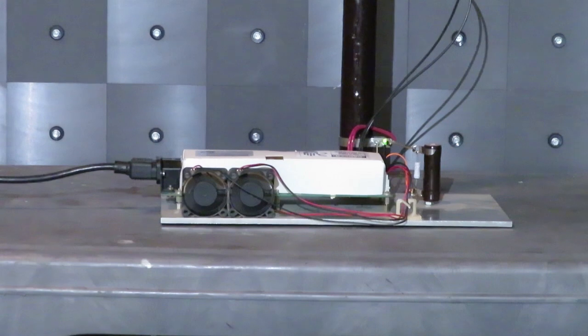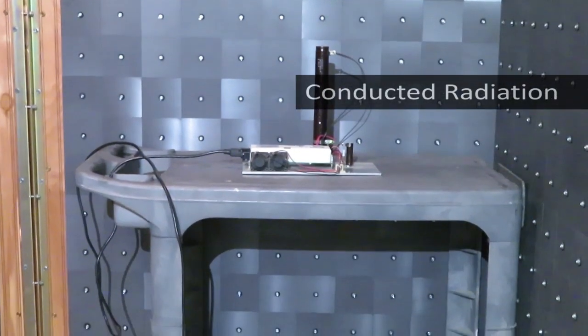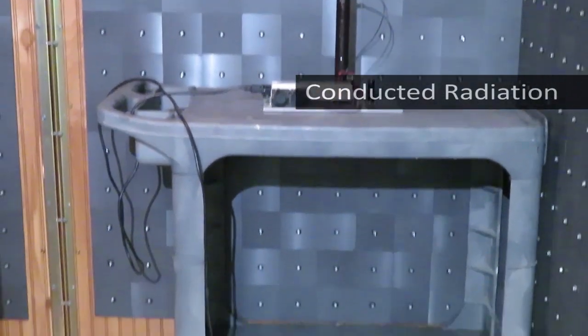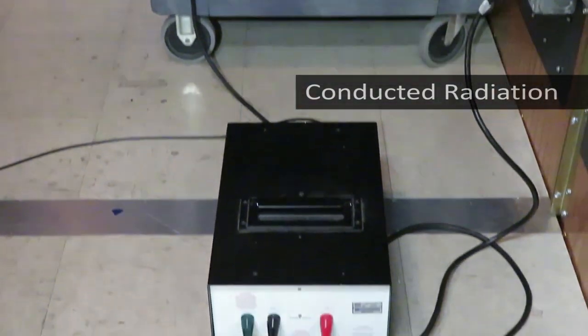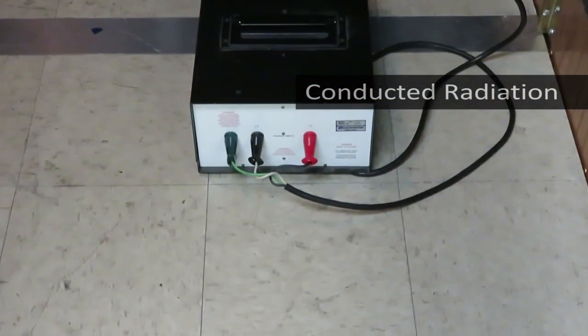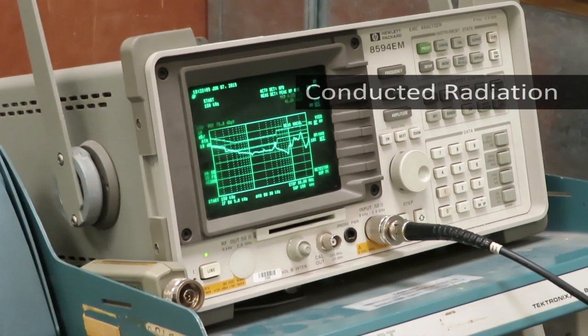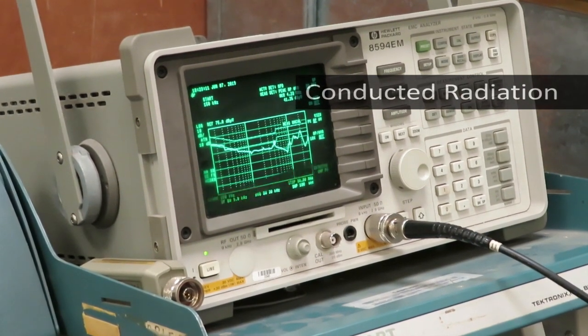We also measure conducted radiation—that is, noise allowed to flow back onto the mains supply line through the device's power cord. For this we use a LISN, or Line Impedance Stabilization Network, to provide a known standard test condition and detect the conducted radiation from the device.